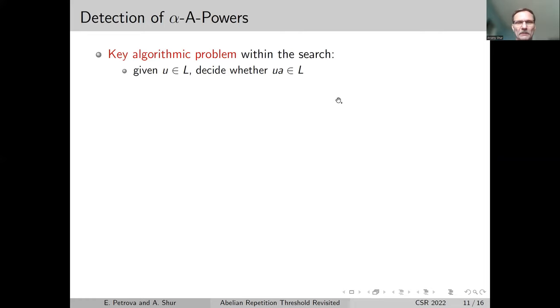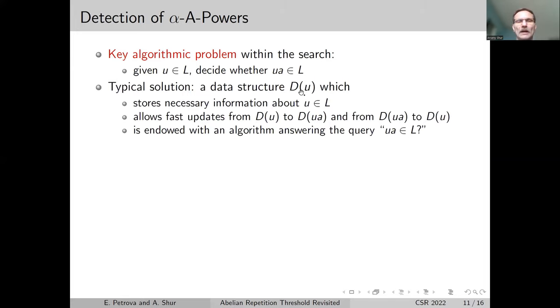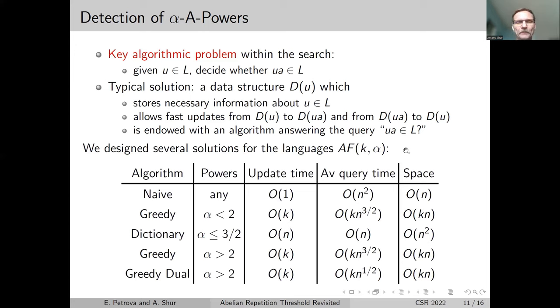We have a key algorithmic problem within the search. Given a word in our language L, we should decide whether the word ua belongs to L. The typical solution is a data structure which stores necessary information about the word u, which allows fast updates from G of u to G of ua and back - add a letter or delete a letter.